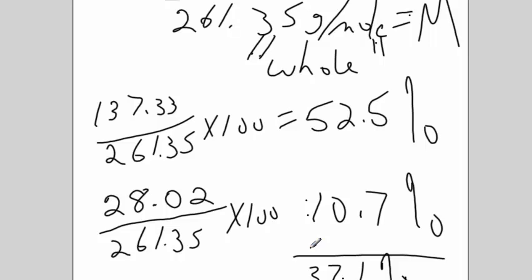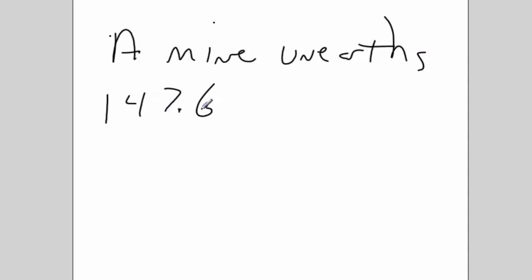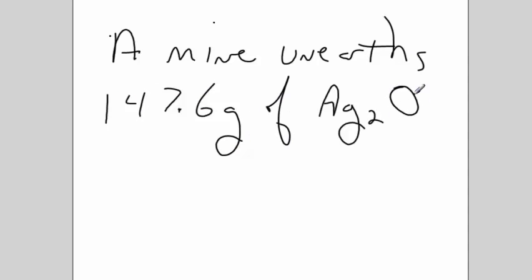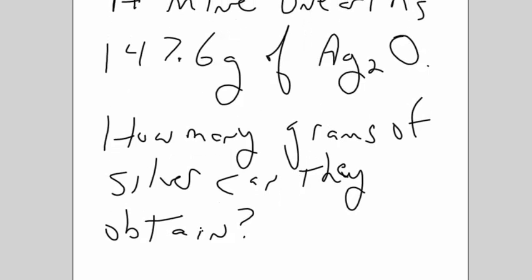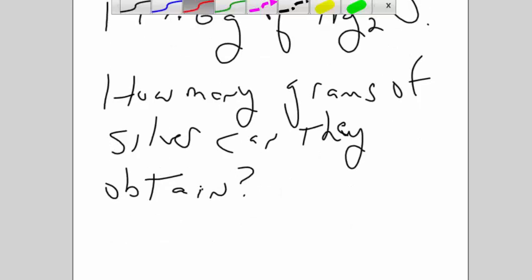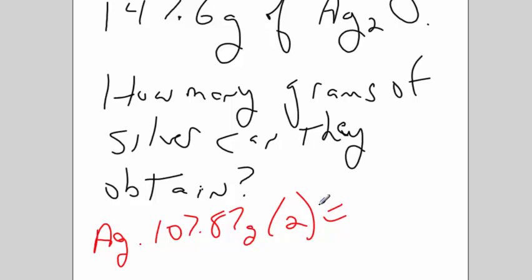Now, what can I do with that? Let's say I have a question like: a mine unearths 147.6 grams of silver oxide. How many grams of silver can they obtain? We could do this with dimensional analysis or with percents. So silver is 107.87 grams per mole, and there's two of them. 107.87 times 2 is 215.74 grams.